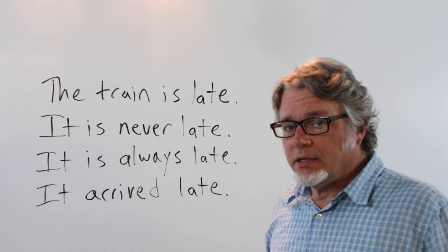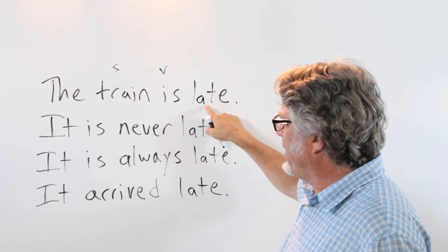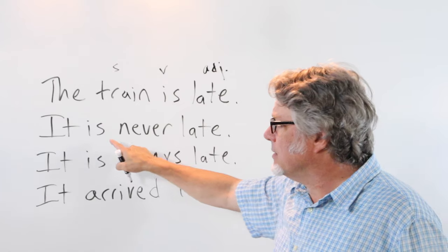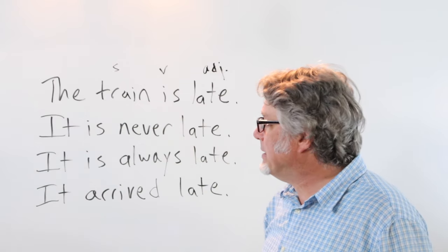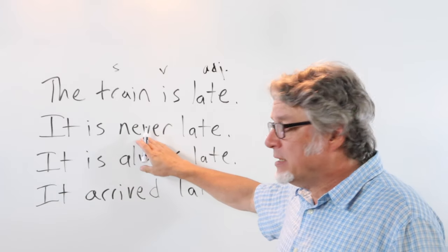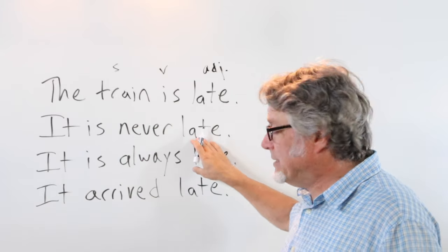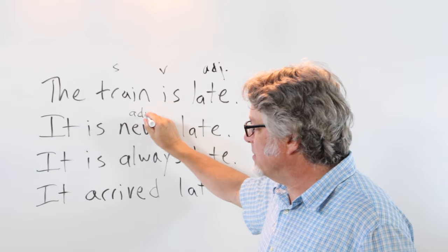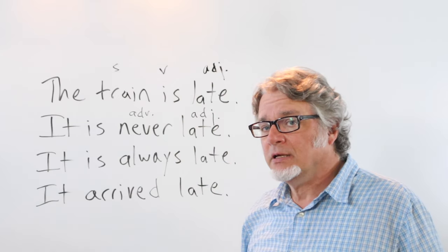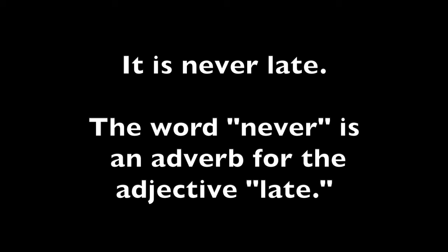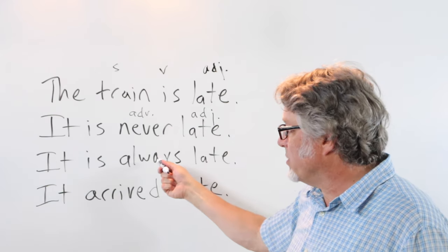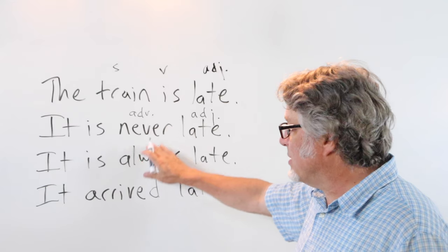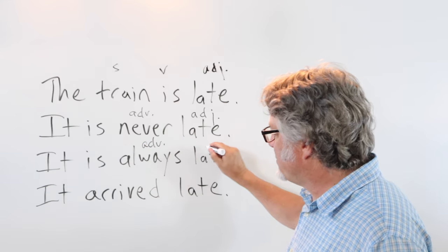In 'the train is late,' here's the subject, this is the verb, and 'late' is an adjective for the subject. In 'the train is never late,' the adverb 'never' tells you how often the train is late. You can also use the word 'always' — it is always late. 'Always' is the opposite of 'never,' and both are adverbs modifying the adjective.